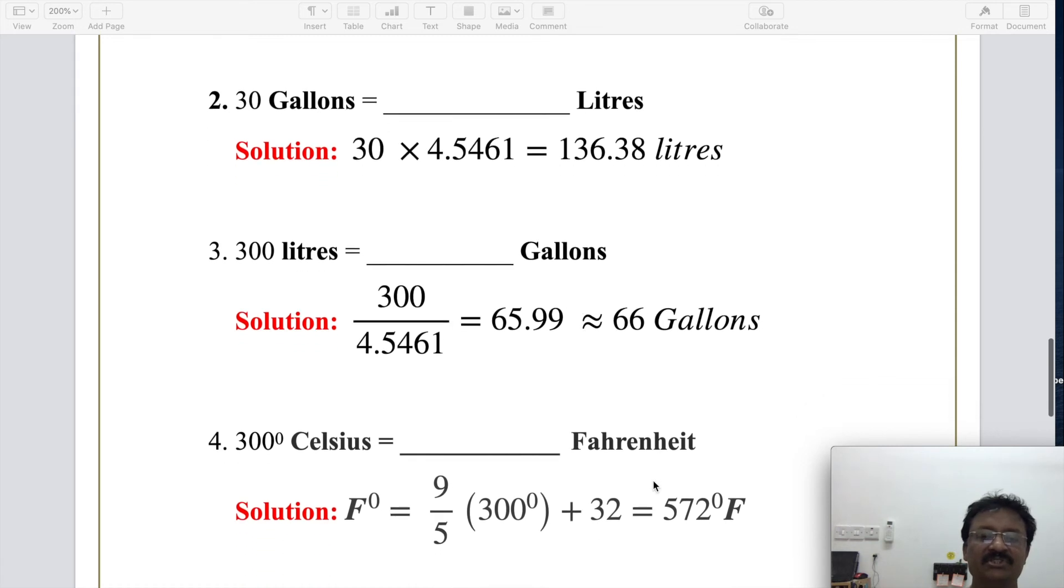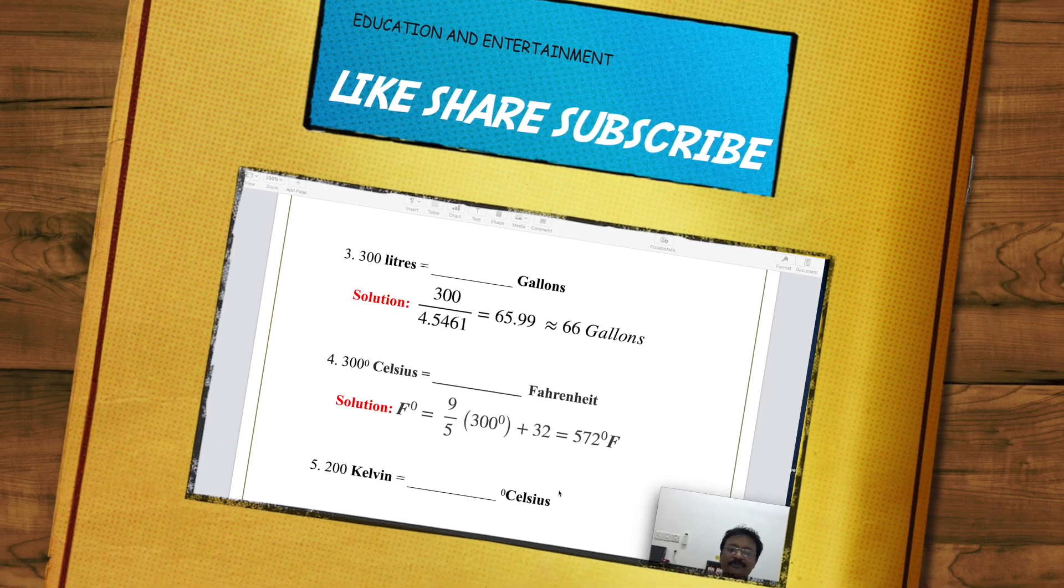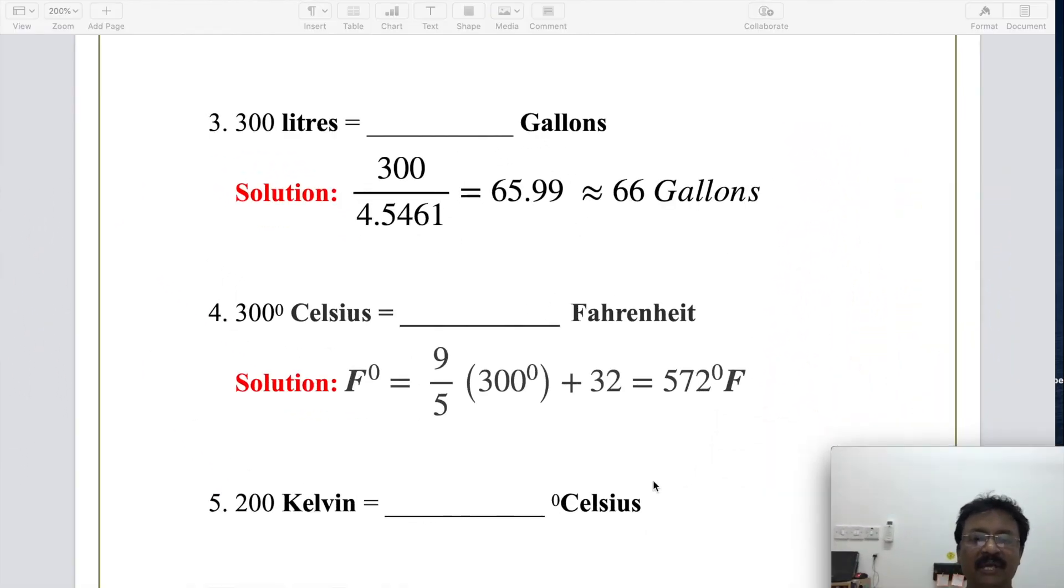The next unit conversion is Celsius to Fahrenheit. 300 degrees Celsius, how to convert it into Fahrenheit. F equals 9/5 times 300 plus 32 is the rule. 300 is Celsius, I apply here. 300 divided by 5 becomes 60. 9 times 60 is 540 plus 32 becomes 572. 572 degrees Fahrenheit is nothing but 300 degrees Celsius.